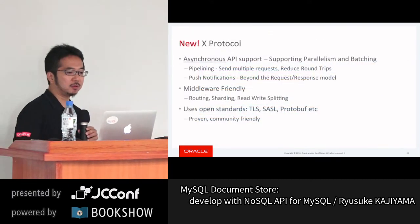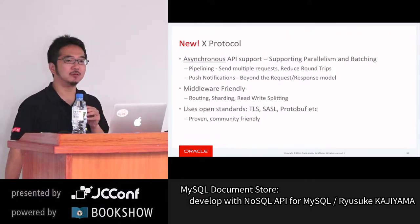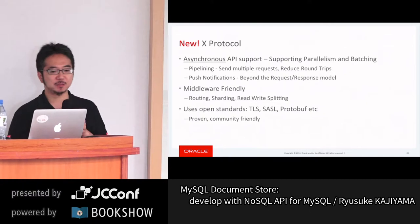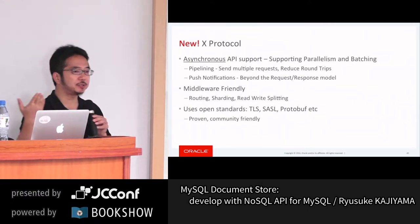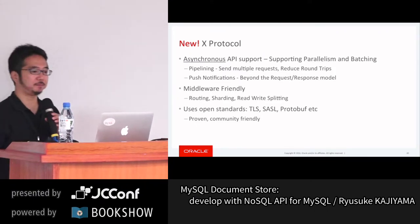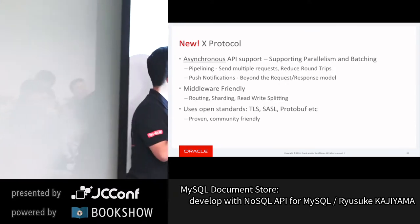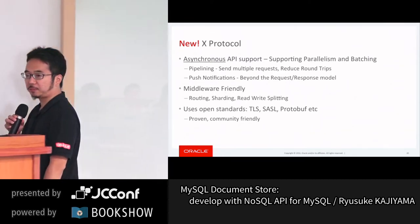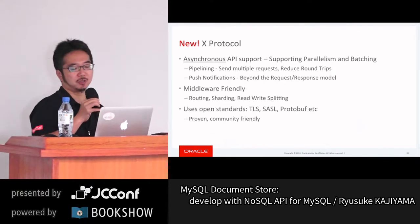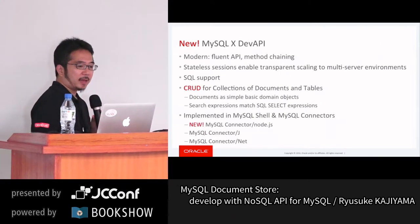X Protocol supports asynchronous operations and pipelining — meaning you can send multiple requests at a time and wait for responses when the server pushes notifications back to the driver. It supports many open standards including SSL, and Protocol Buffers, which is an open-source implementation of object serialization from Google.